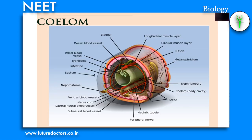The body cavity between the body wall and gut wall which is lined by mesoderm is called the coelom. The presence or absence of a cavity between the body wall and the gut wall is a very important classification feature. Animals possessing coelom are called coelomates. Examples: annelids, molluscs, arthropods, echinoderms.